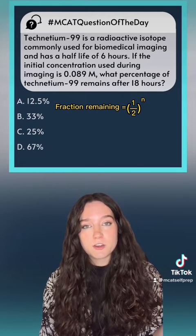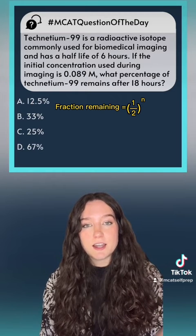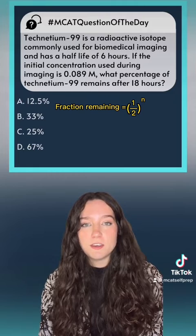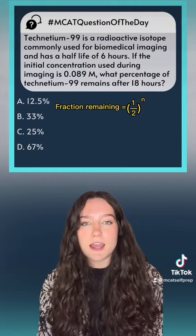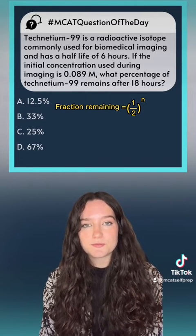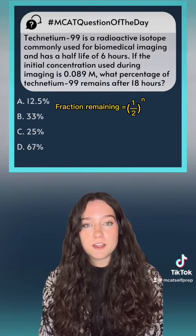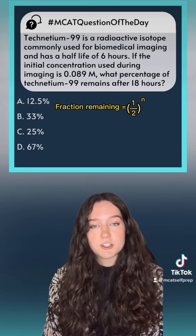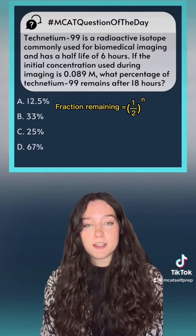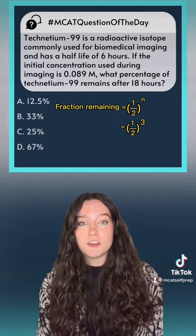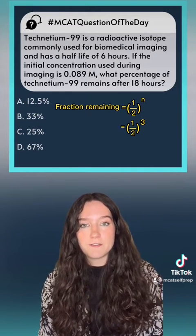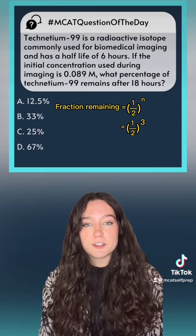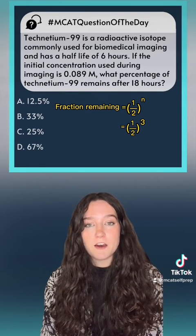Referring back to the question, the half-life of technetium-99 is six hours. What fraction is remaining after 18 hours? Well, after 18 hours, three half-lives have passed. Entering that into the equation, we're going to have fraction remaining equals one-half raised to the third power, since three half-lives have passed. Multiplying that out, that gives us a fraction remaining of 1 over 8.